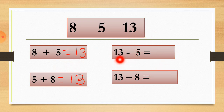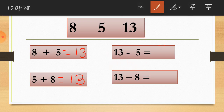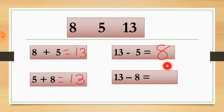Now let's move to the subtraction column. Make 13 circles first and cut 5 circles from it. Which number will you get as an answer? Using the shortcut: here is 13 and 5, so which number is left in the family? The number 8 is left. So you can write 8 here. When you draw 13 circles and cut 5 circles from it, you will definitely get 8. That is how you write the answer using the family number.